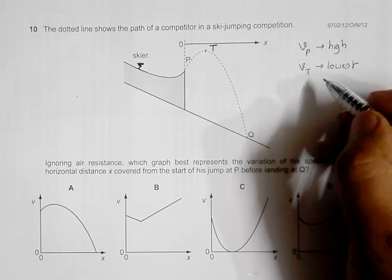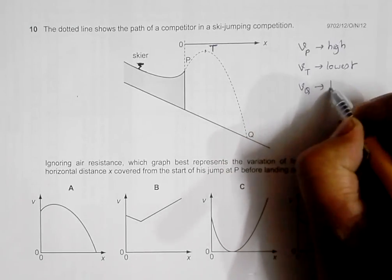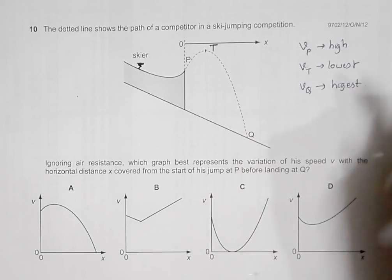Because only the horizontal velocity remains and the vertical velocity decreases to zero there. And VQ should have the highest value.